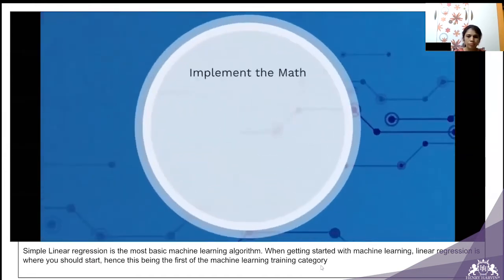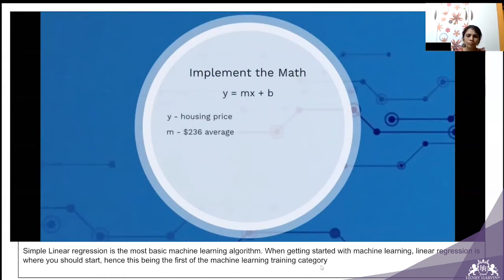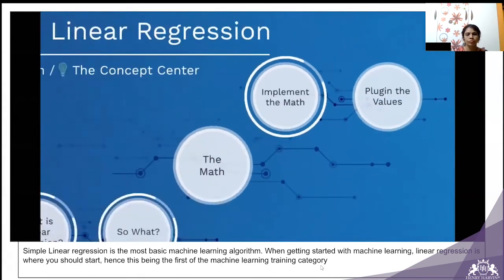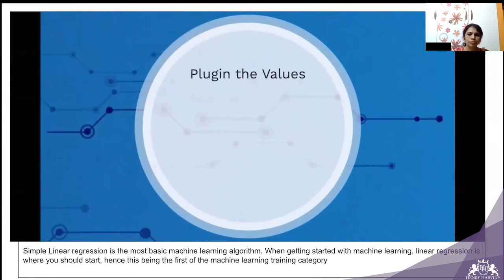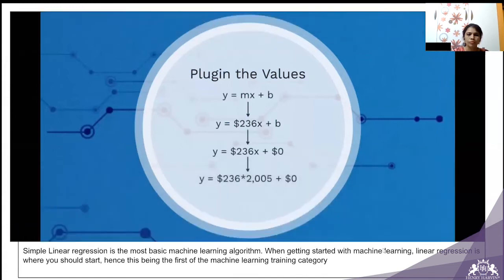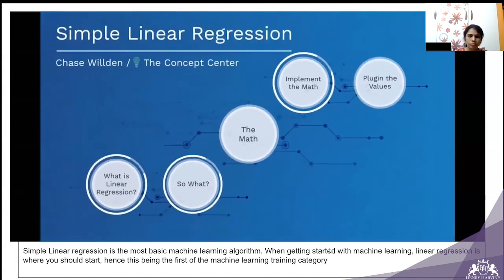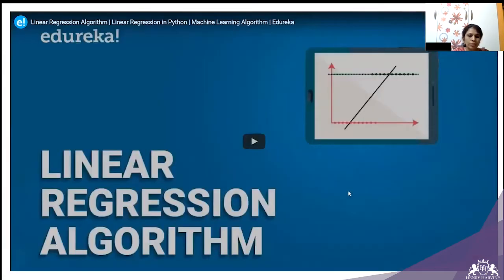Let's implement this math equation. Y is the housing price we are trying to predict; m, the slope, is the 236 average square footage value; x is the square footage input; and b, the bias, is zero. Plugging in the values: 236 as slope, 0 as bias, and 2,005 as square footage gives us $473,180. That is simple linear regression. You can go through additional articles and videos on this when you get time.